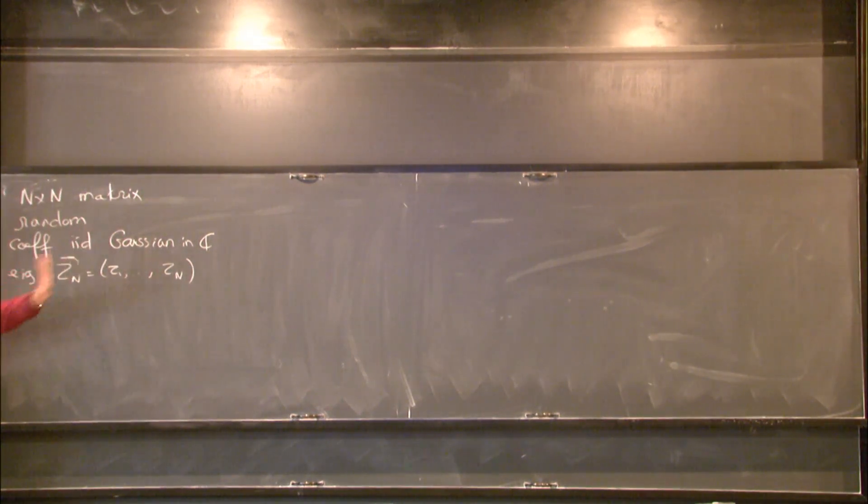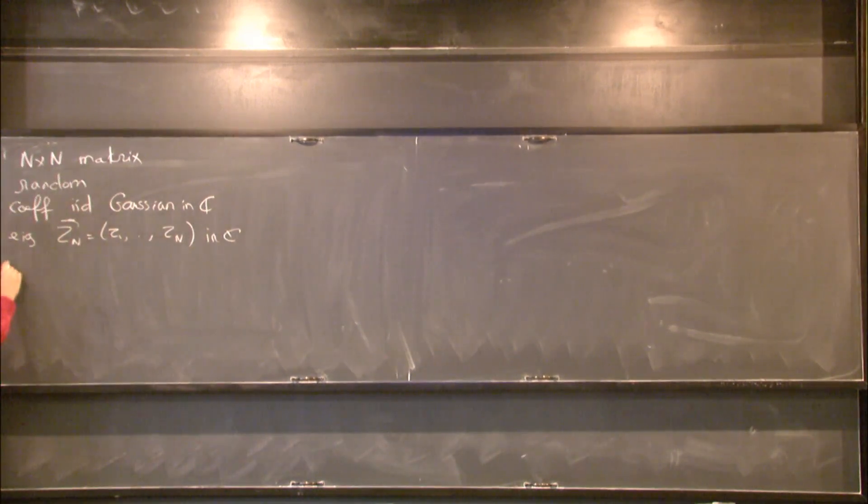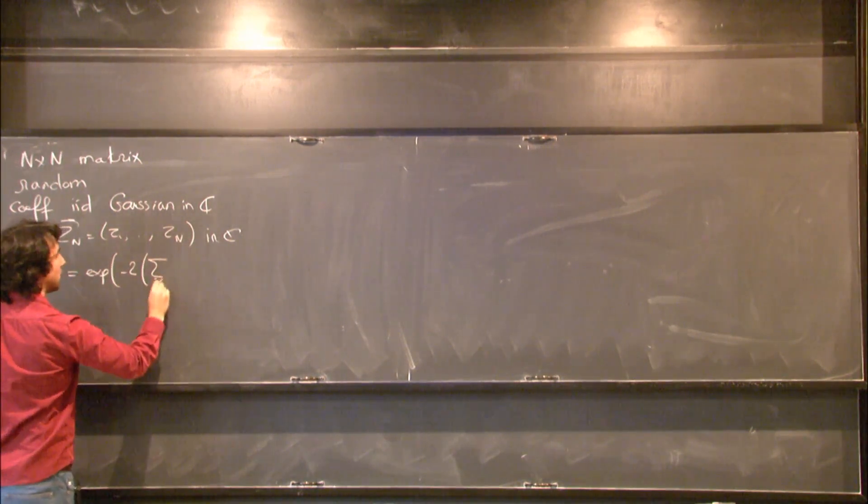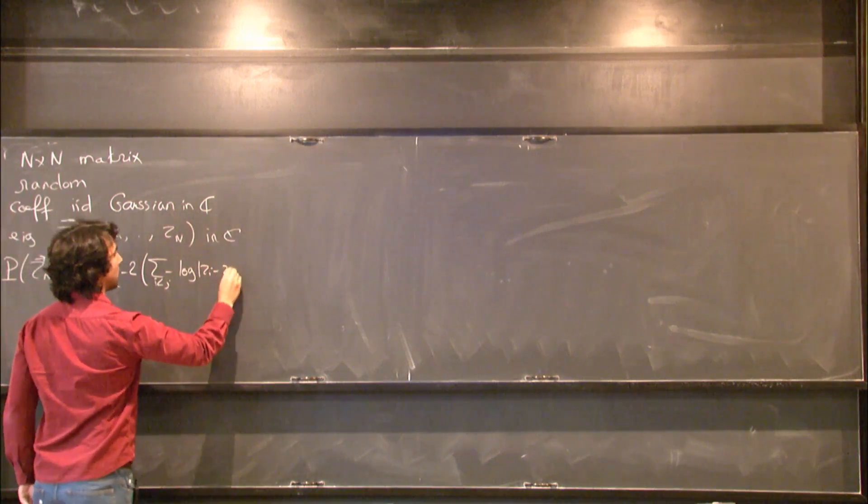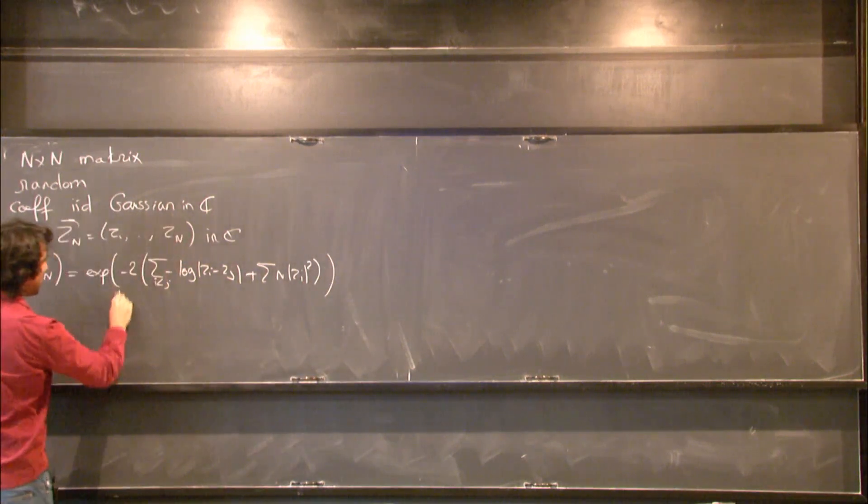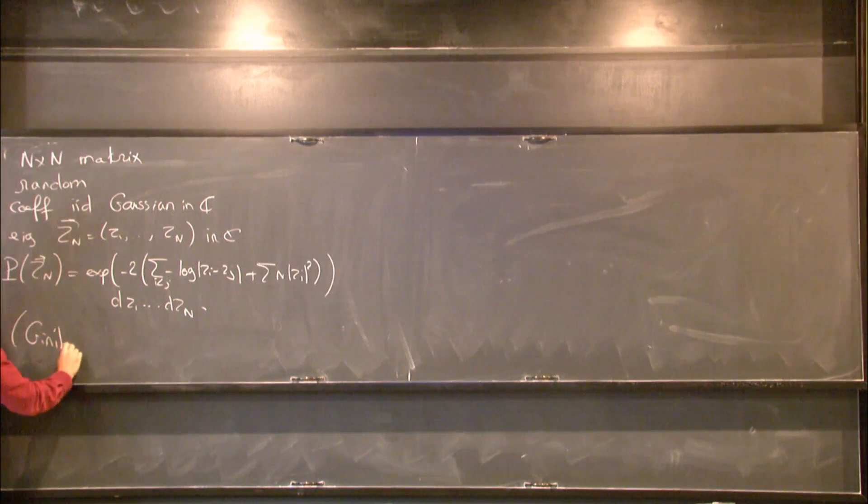So I did completely IID. I do not impose symmetry for the moment. So the eigenvalues are in C. And I can ask, well, what's the probability of observing a certain n-tuple? And it turns out that in this specific case, you can compute the law explicitly and you get something like this. And then Z_1, Z_n. And I think the first one to do this computation was Ginibre in the 60s.